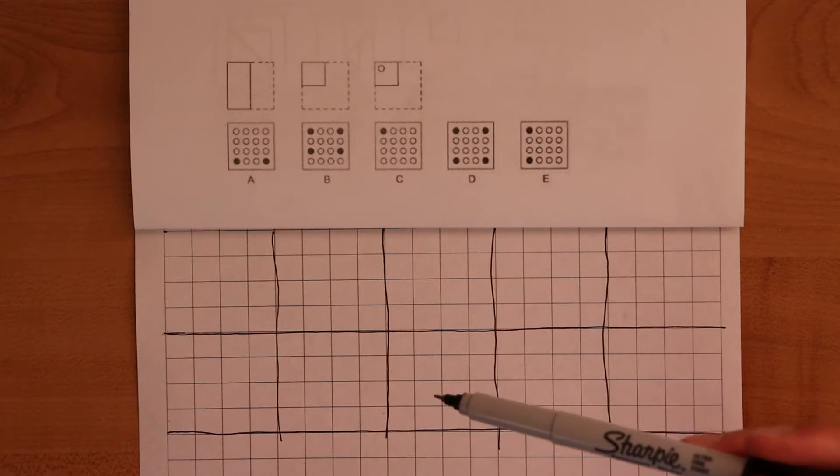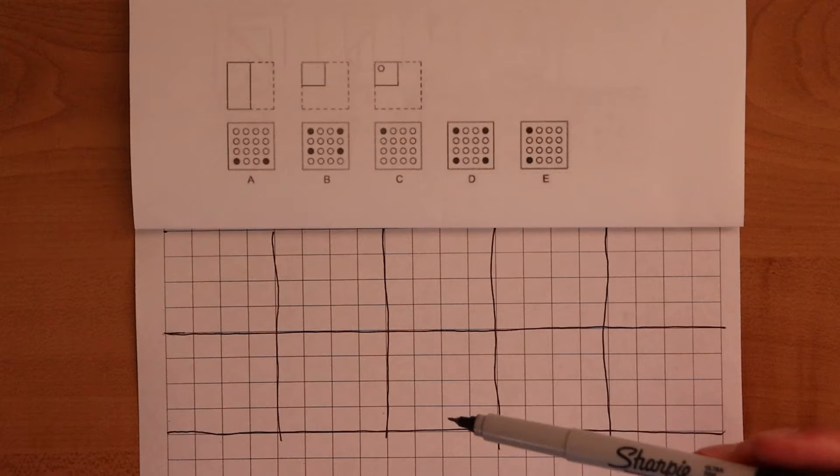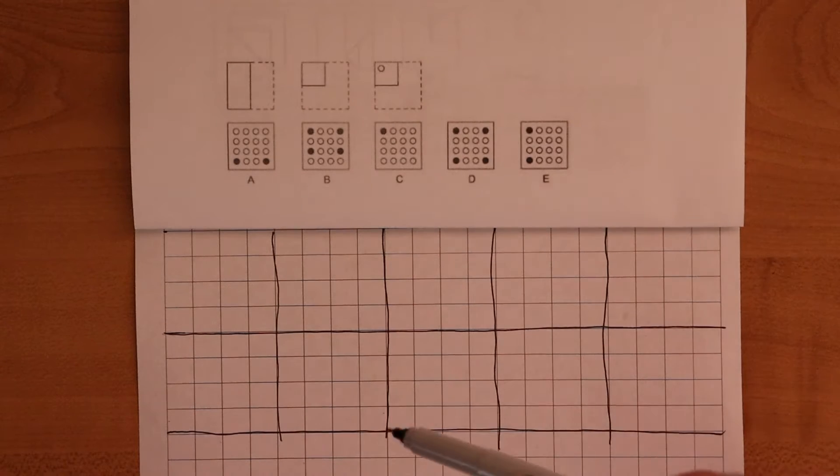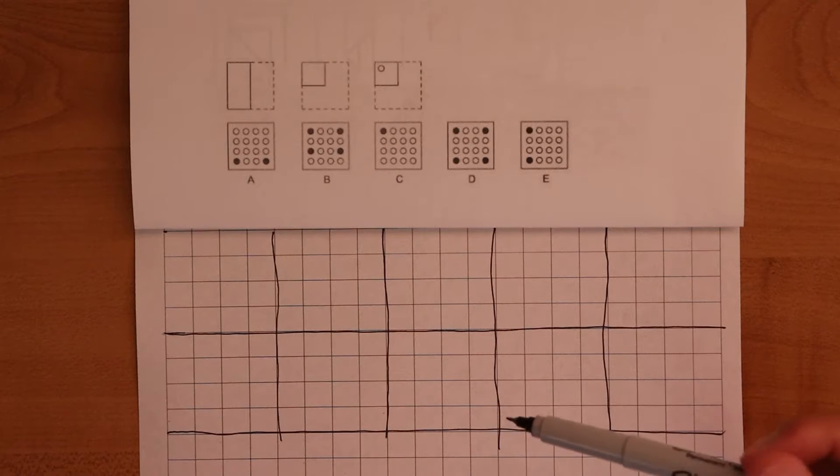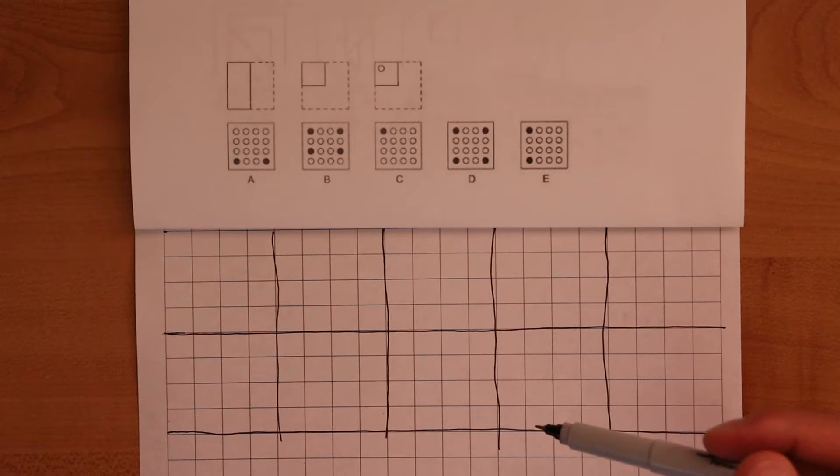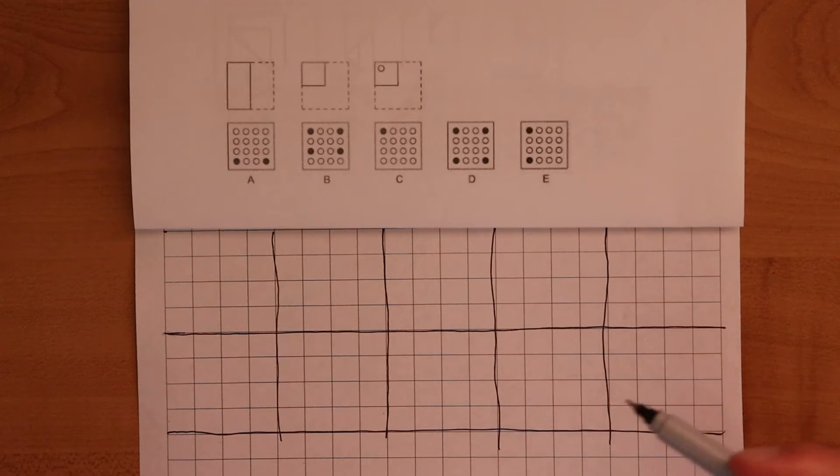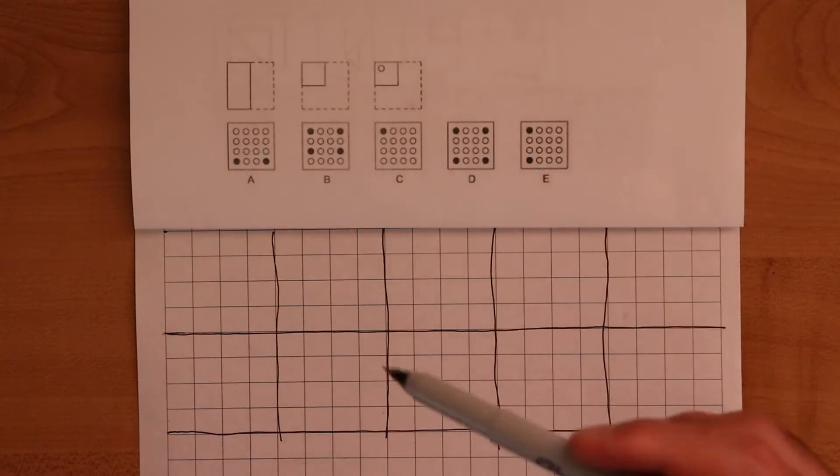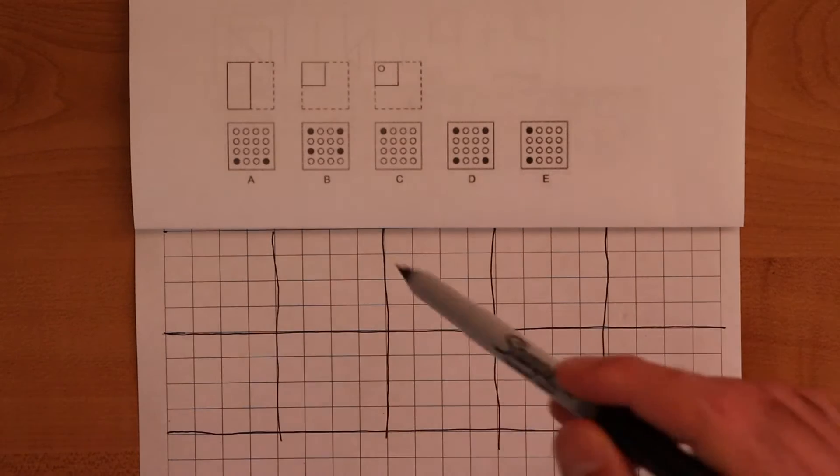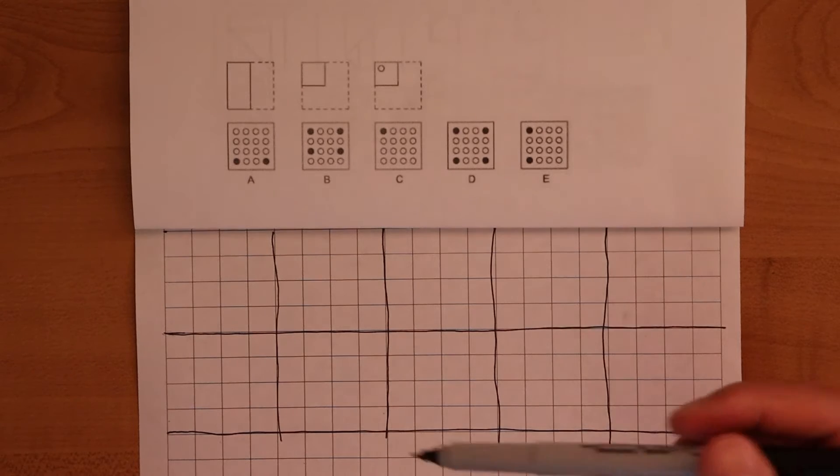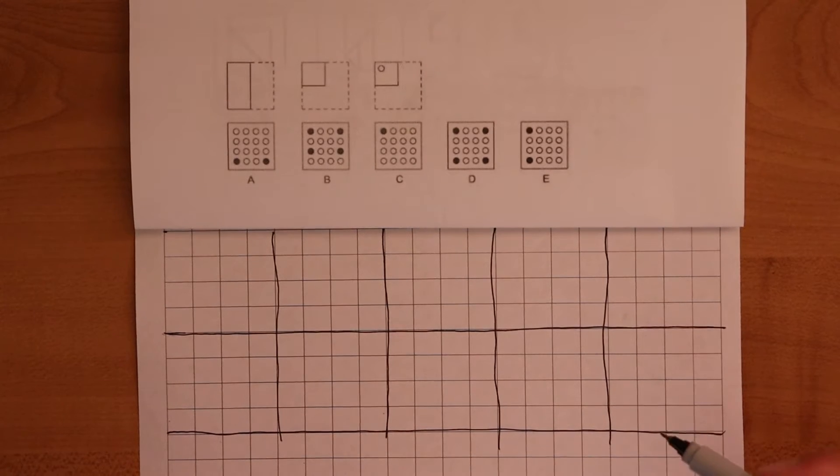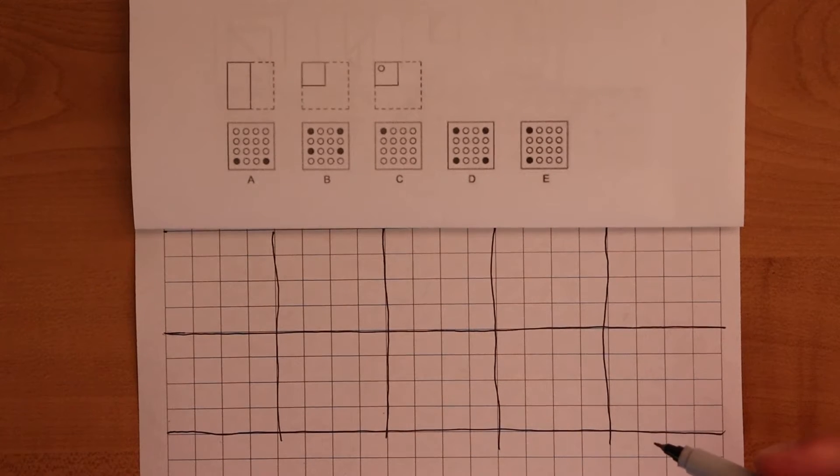The other dilemma is it's against the rules of Prometric and taking the DAT to draw anything or write notes on your whiteboard during breaks. So once you're done with the survey of natural sciences section, what I recommend doing is before clicking next to go on to the break, just wipe off your whiteboard or ask for a new whiteboard, and then make these boxes there, then click next and go on to the next section so that your boxes are already made for the PAT section.